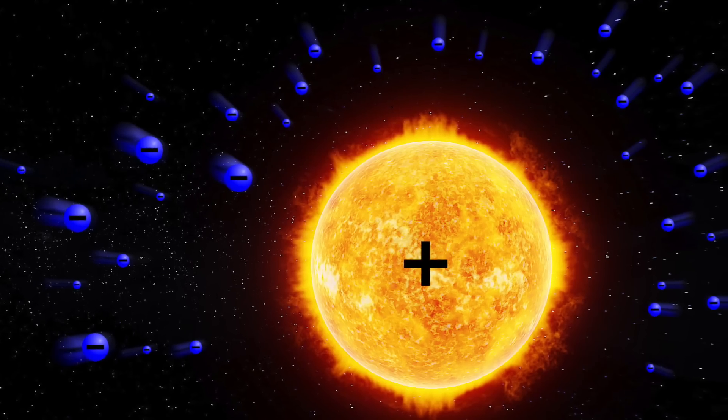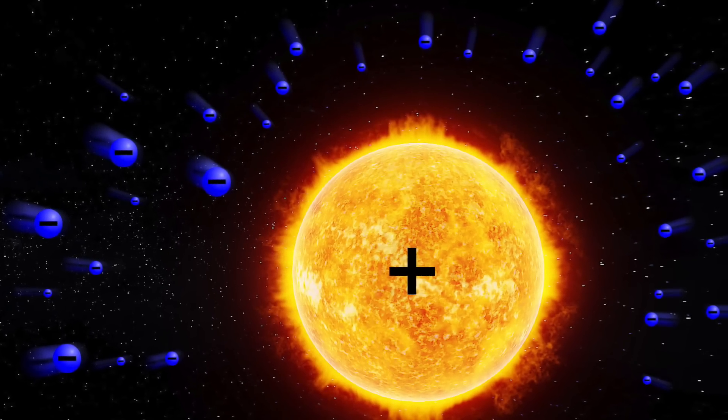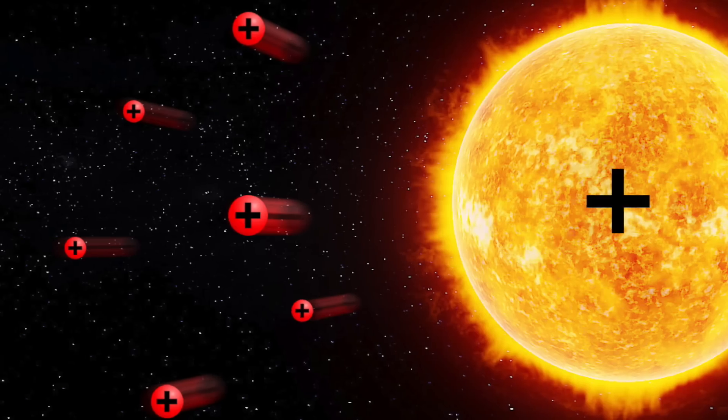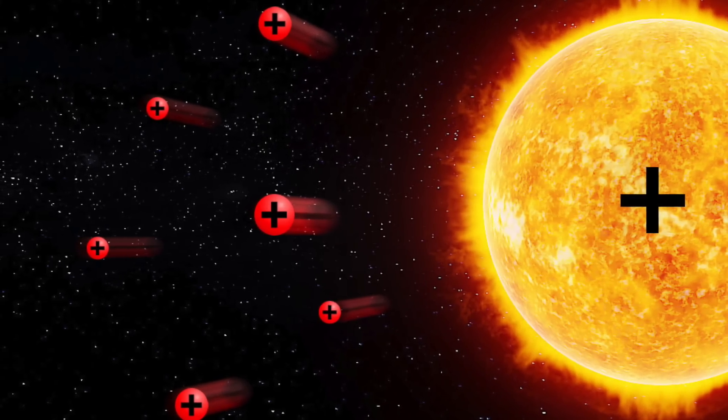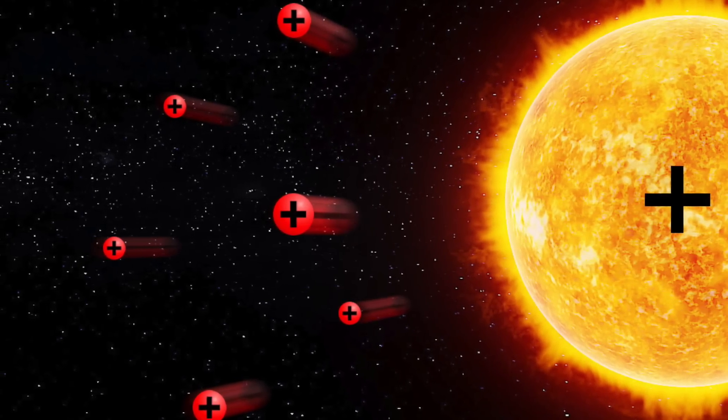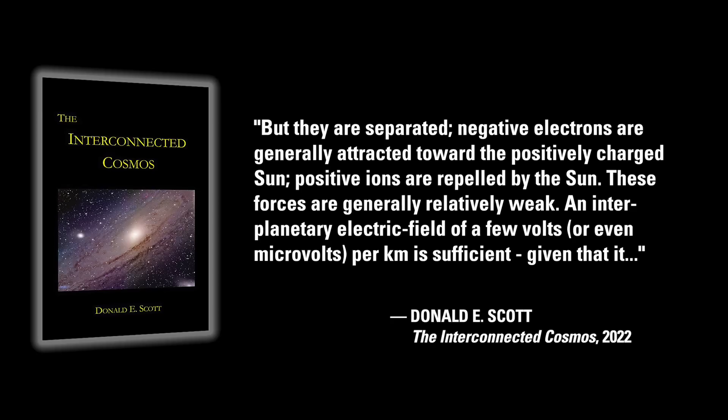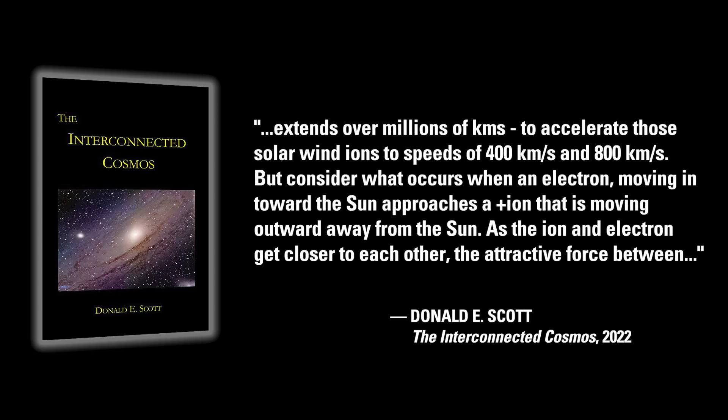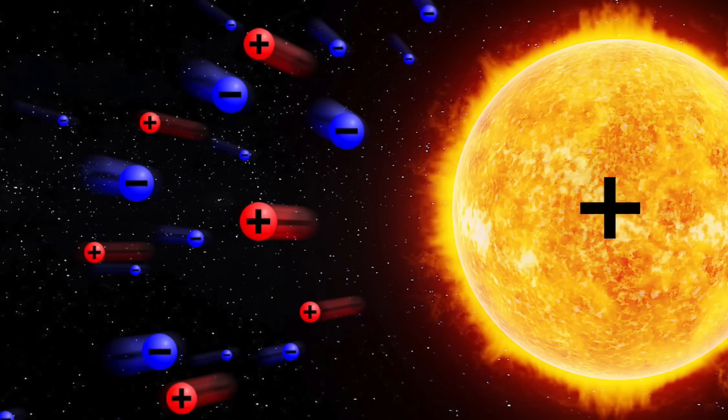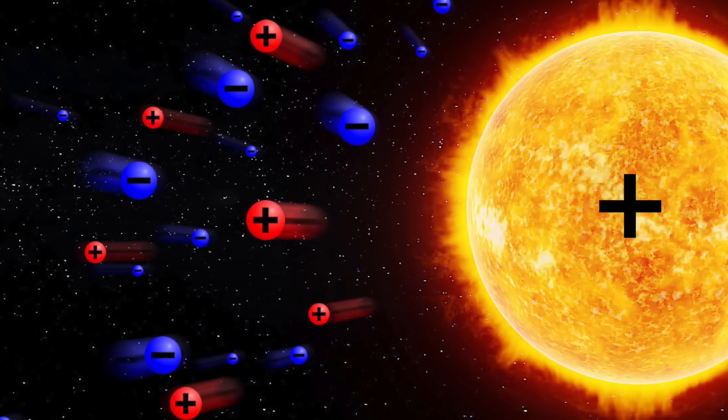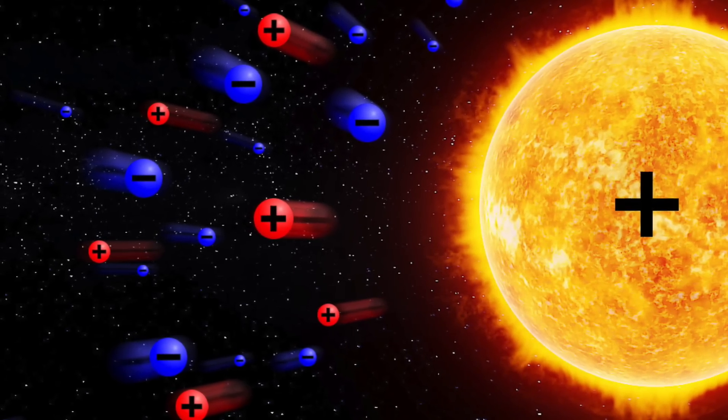But in interplanetary space they are separated. Negative electrons are generally attracted toward the positively charged sun, and positive ions are repelled by that sun. These forces are generally relatively weak. An interplanetary electric field of only a few volts or even microvolts per kilometer is sufficient, given that it extends over millions of kilometers, to accelerate those solar wind ions to speeds of 400 and 800 kilometers per second.